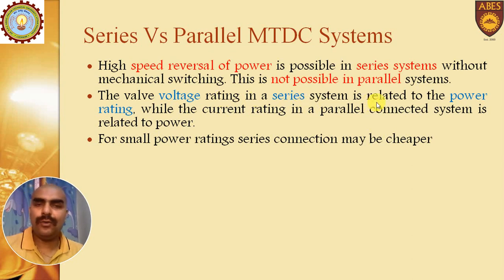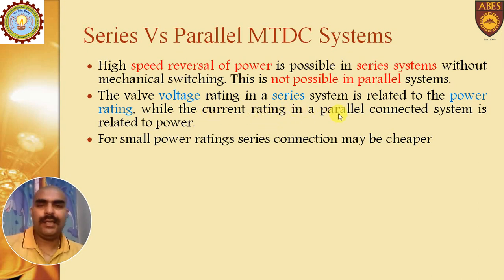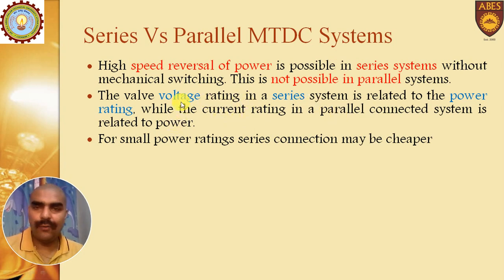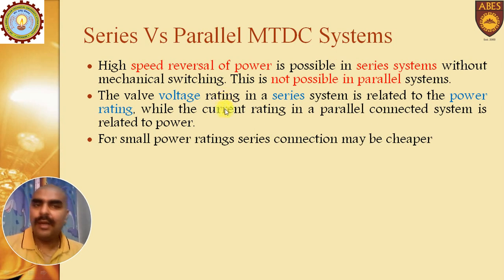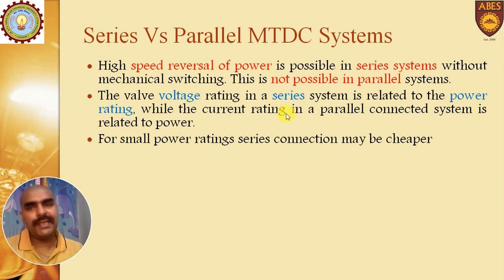Second point: valve voltage rating in series system is related to power rating, while the current rating in parallel connected system is related to power. Series main voltage rating is related to power, and parallel main current rating is related to power, because in series current is constant and voltage is variable, and in parallel voltage is constant and current is variable.